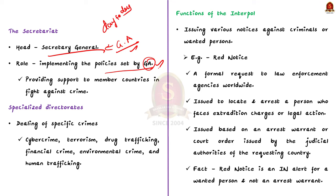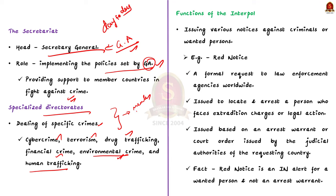The Secretariat provides support to member countries in their fight against crime. Apart from the three main bodies, Interpol also has a number of specialized directorates that deal with specific crimes such as cybercrime, terrorism, drug trafficking, financial crime, environmental crime, and human trafficking. These directorates work closely with member countries to develop strategies to combat these specific crimes.